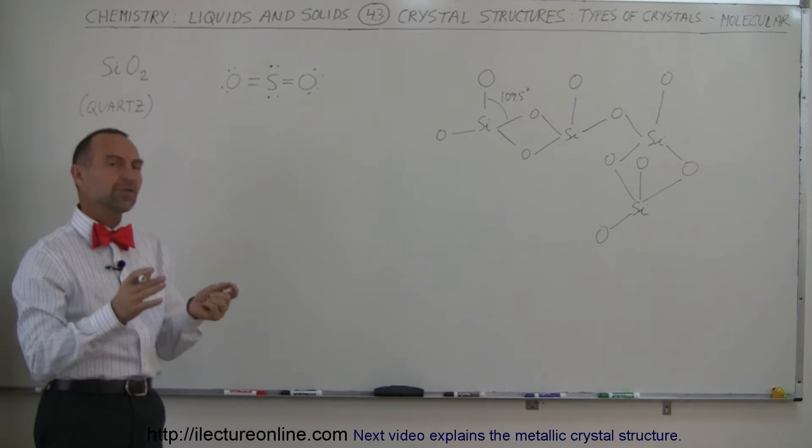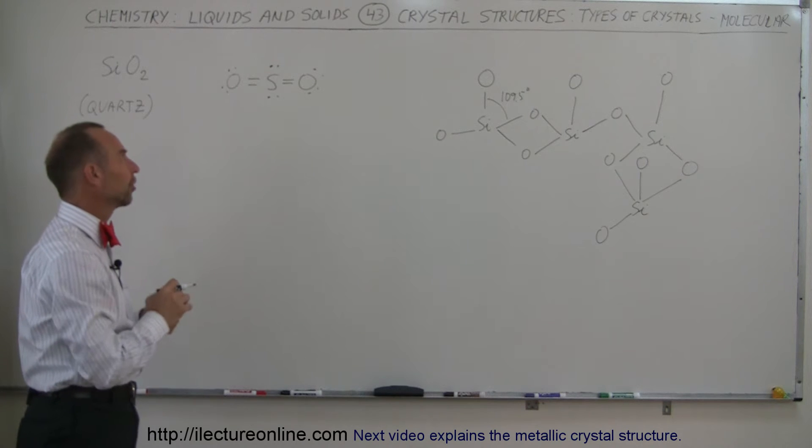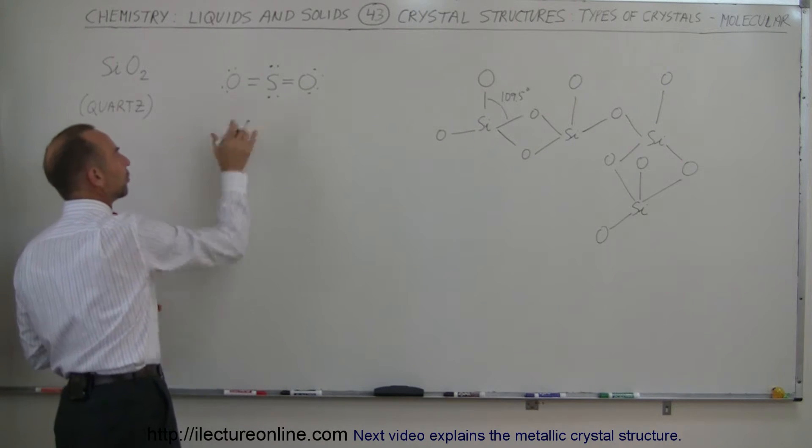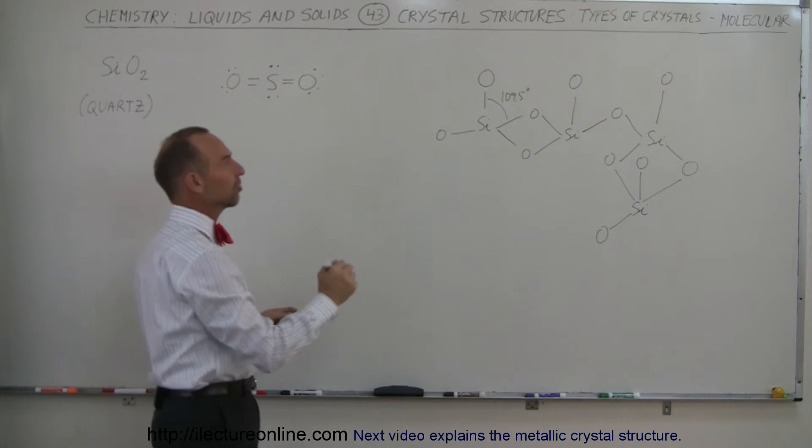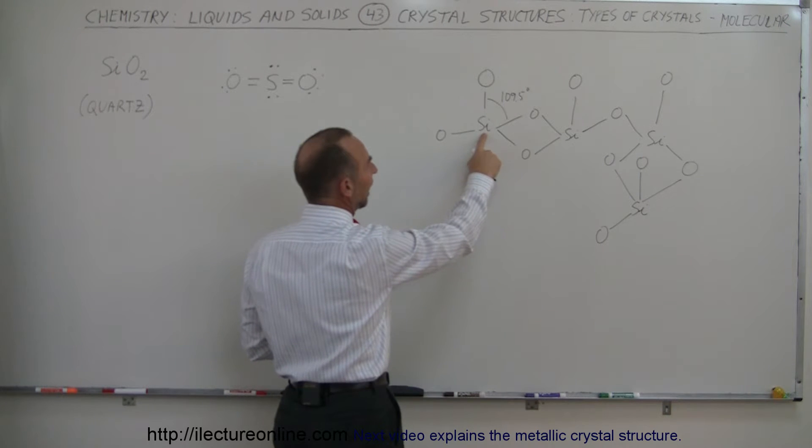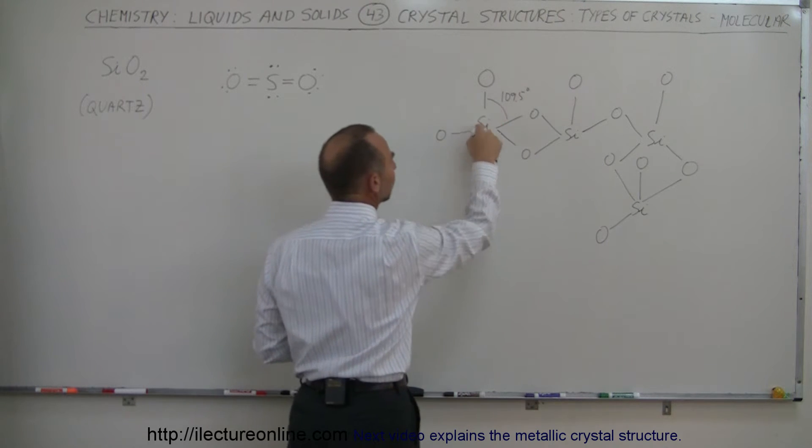But now we want to talk about a crystalline structure made out of molecules, silicon dioxide. So normally you would have a structure like this between one silicon and two oxygens, but when it gets into a crystalline structure things change a little bit. What happens here is that you have silicon and four oxygens connected to the one silicon.